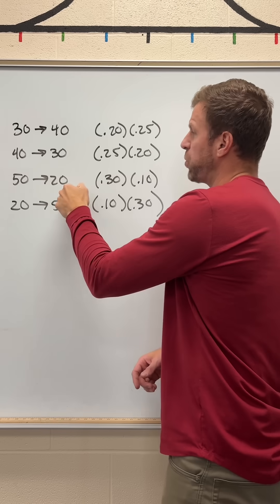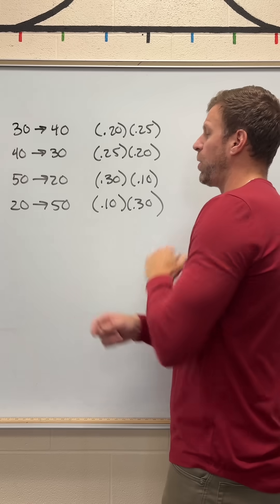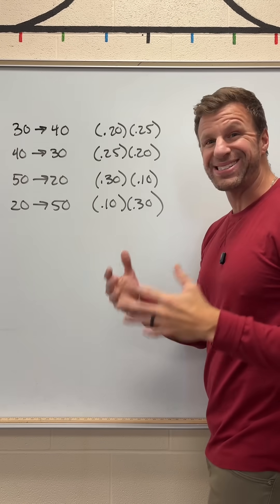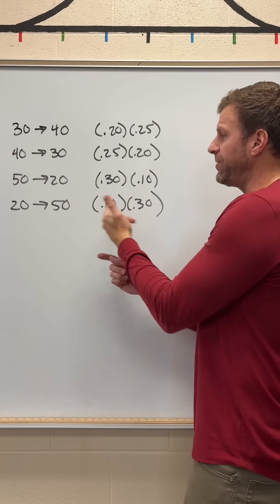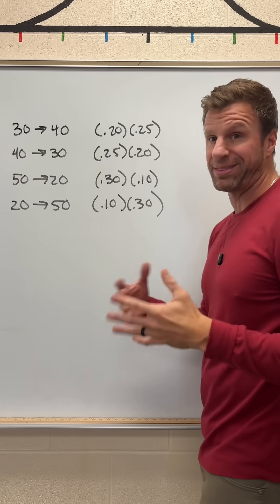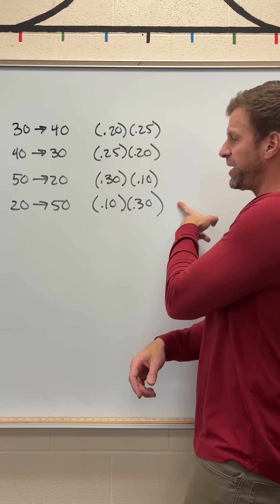Then we could get a 50 and a 20, that's 0.3 times 0.1. 0.3 for the 50, 0.1 for the 20. But we could reverse that for a distinctly different outcome: 20 on the first, 50 on the second. Again, that's still going to be 0.1 times 0.3, but they are distinctly different. So here we get 0.03, and here we get 0.03.